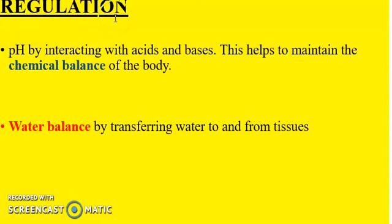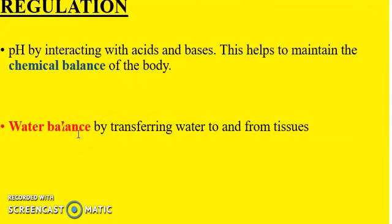In terms of regulation, blood controls the pH by interacting with acids and bases. The pH refers to the power of hydrogen or the potential of hydrogen, and this helps to maintain the chemical balance of the body. Blood also ensures that water is balanced by transferring it from one part of the tissue to another, regulating the water content in the body so that you don't lose excessive water.